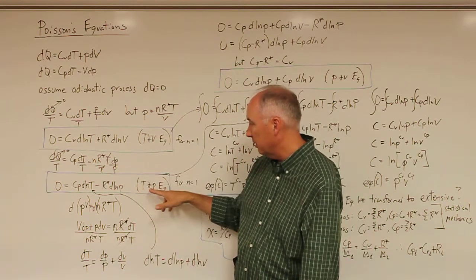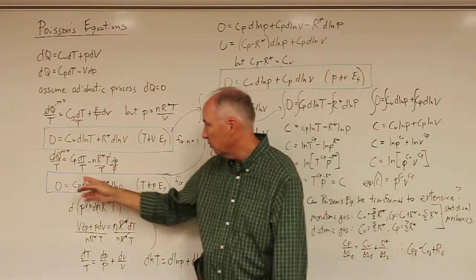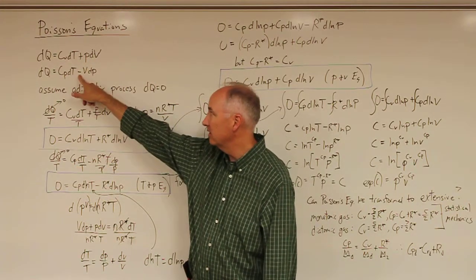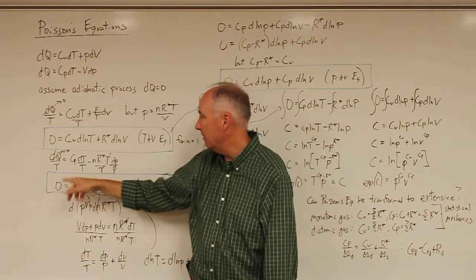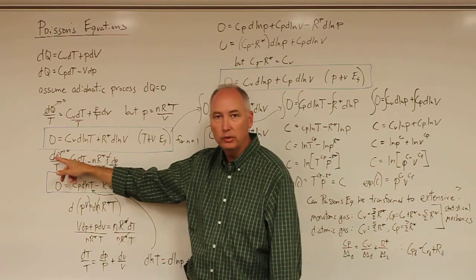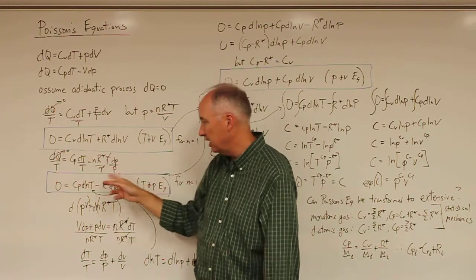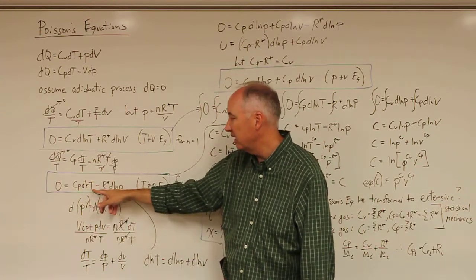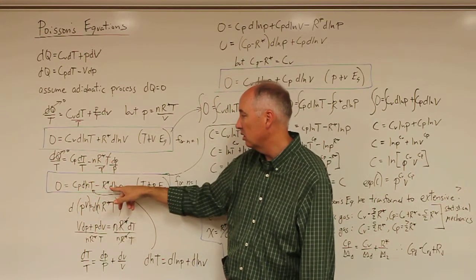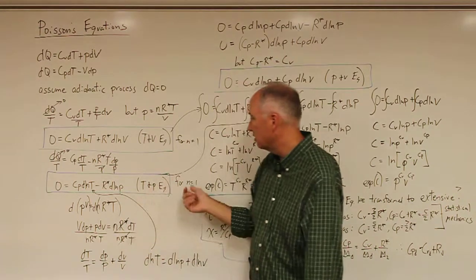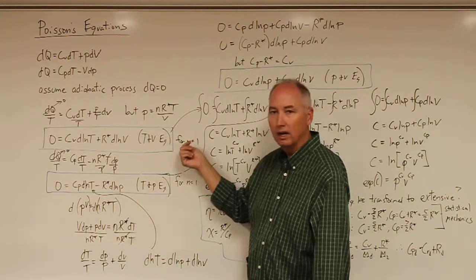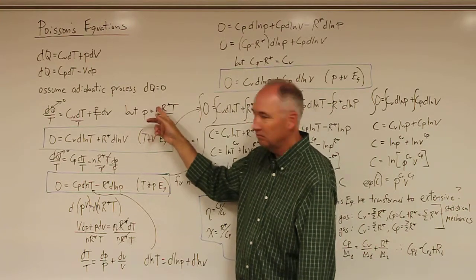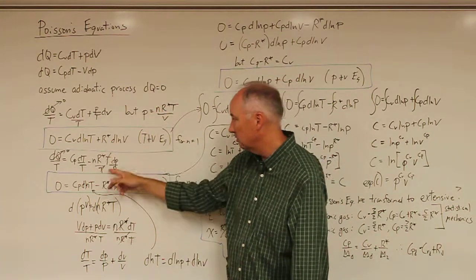If we look at temperature and pressure, we start off with a similar form of the equation. Once again, set dq equal to zero, divide both sides by T, and you'll end up with zero is equal to c_p d log T minus R* d log P. And this is for one mole.